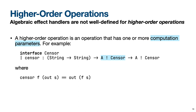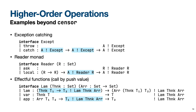As explained earlier, the problem is that higher-order operations break this modularity. Concretely, algebraic effect handlers are not well defined for higher-order operations such as the catch example discussed earlier. A different example is the censor operation, which takes a function of type string-to-string as its first parameter and a computation as its second parameter. The behavior of the censor operation is that the censoring function is applied to the output produced by the parameter computation. It is not well defined how to handle higher-order operations such as this.